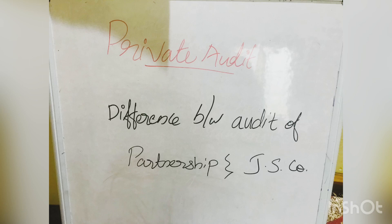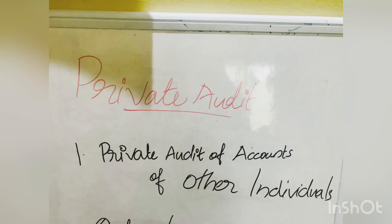The auditor will report to the members of the company and certify the accounts in accordance with the provisions of Section 227 of the Companies Act in the case of a joint stock company. In partnership, the auditor reports or certifies in accordance with the terms of appointment. These are the main differences.